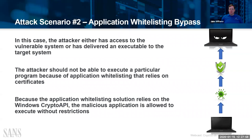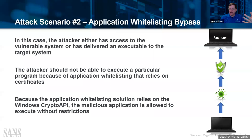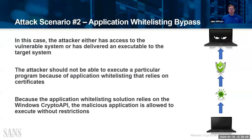Another scenario: application whitelist bypass. When someone gets hacked, everyone asks if app whitelisting was in use — and yes, strict whitelisting is used in high-security environments. If an attacker delivers an executable to a vulnerable system and the whitelisting solution relies on the crypto API to validate code signing certificates, the malicious app is allowed to execute without restrictions. Several antivirus vendors also pay less heuristic attention to digitally signed files and rely on the crypto API to validate those signatures.